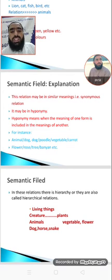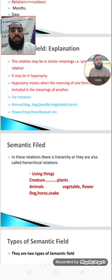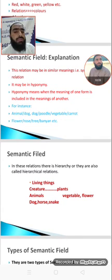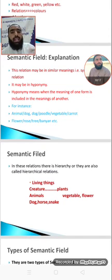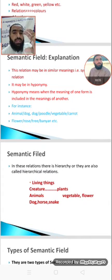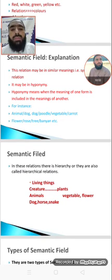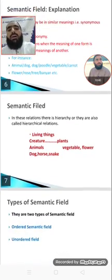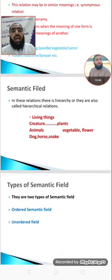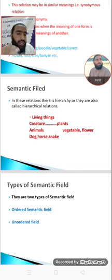The relation in a Semantic Field may be synonymous or hyponymous. Hyponymy means when the meaning of one form is included in the meaning of another. For instance, 'animal' — the meaning of animal is also present in 'dog.' Like 'vegetable' — you can relate the meaning of vegetable to 'carrot.' Or 'flower' — the meaning of flower is found in 'rose.' These words show hyponymy. In these relations there is a hierarchy, and they are also called hierarchical relations.